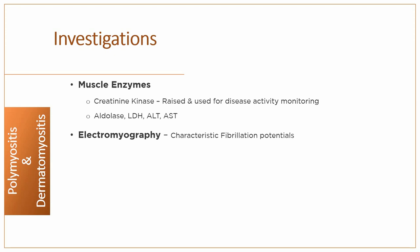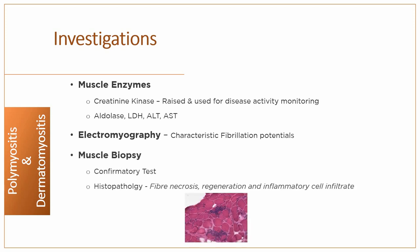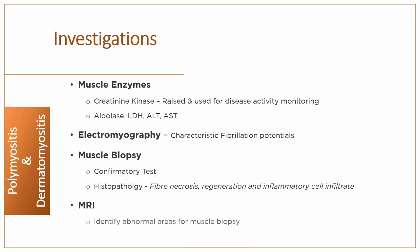Electromyography shows characteristic fibrillation potentials. Muscle biopsy is the confirmatory test and shows the typical features of fiber necrosis, regeneration and inflammatory cell infiltrate, and is also helpful in excluding mimicking conditions. Occasionally a biopsy may be normal, particularly if myositis is patchy, so MRI should be used to identify areas of abnormal muscle for biopsy. MRI shows muscle edema in acute myositis.